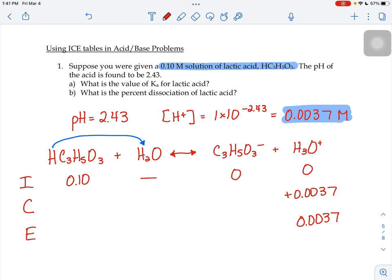that must mean my change is a positive 0.0037. Because my lactate ion is on the same side and in a one-to-one ratio with my hydronium ion, they also experience a 0.0037 change. My lactic acid is going to come down by 0.0037 because it's reacting in a one-to-one ratio. And so this guy's equilibrium concentration is going to be 0.0963.